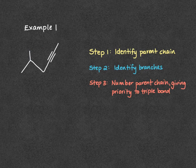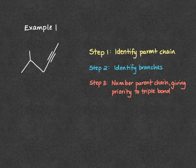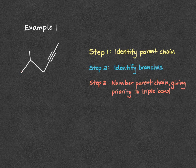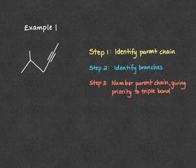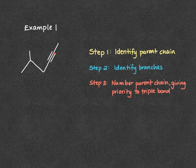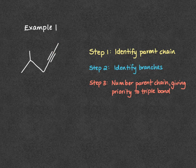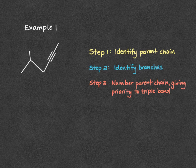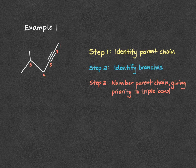Our next step is going to be to number our chain, giving priority to the triple bond. If we start at the left side of our chain, we hit our triple bond on carbon 1, 2, 3, 4. If we start on the right side of our chain, we hit our triple bond on carbon 2. So what that means is that we're going to number from right to left. So 1, 2, 3, 4, 5, and 6.